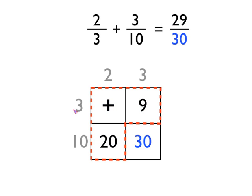The denominator of the answer, the bottom number, is just the other number that's left outside of that red box, the 30. So the denominator is 30. So 2 thirds add 3 tenths is 29 thirtieths.